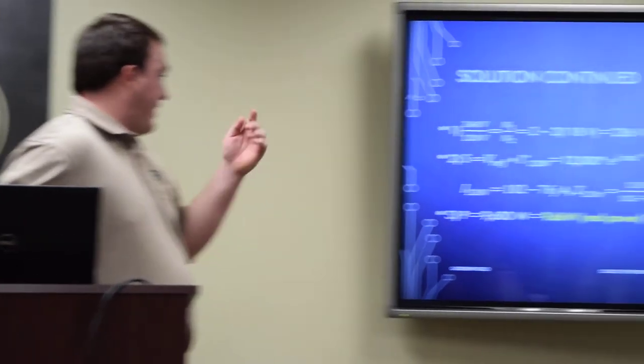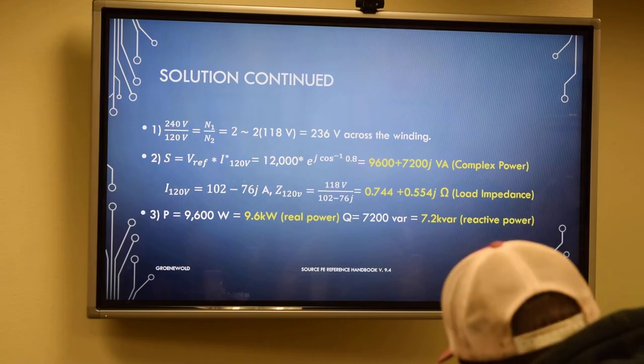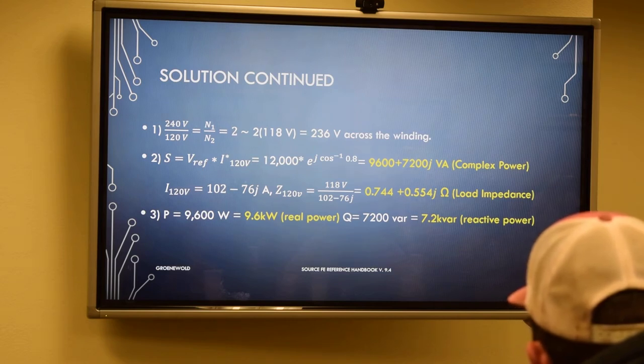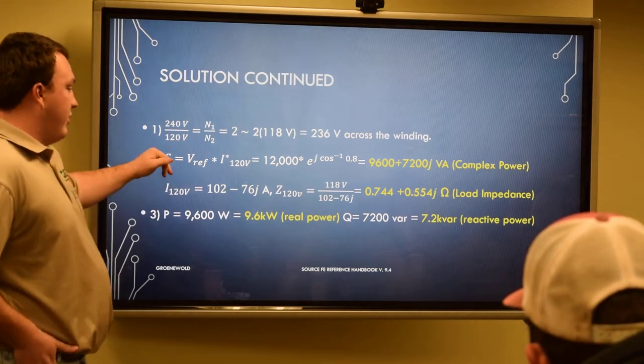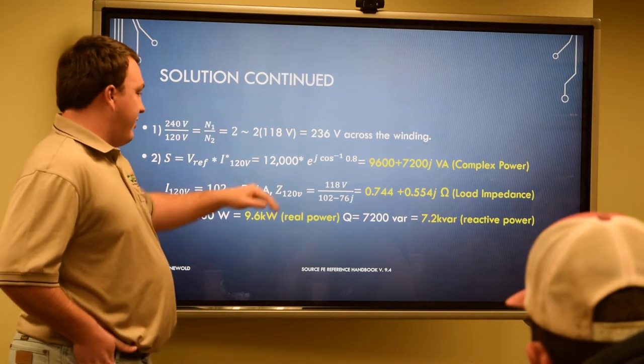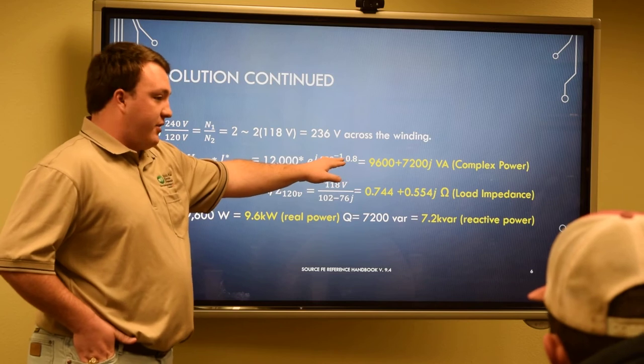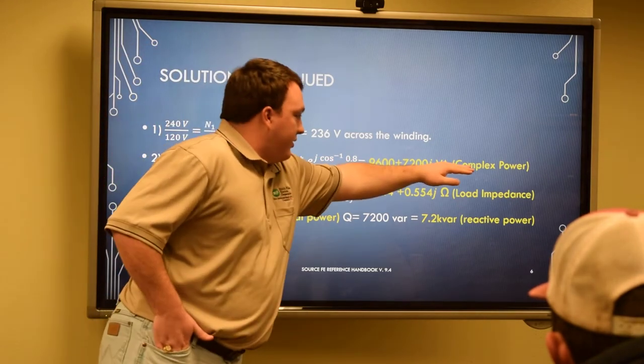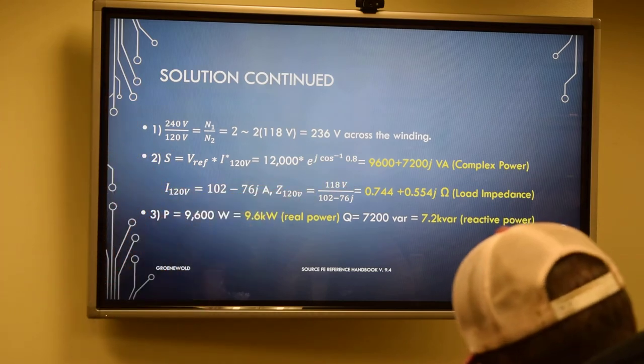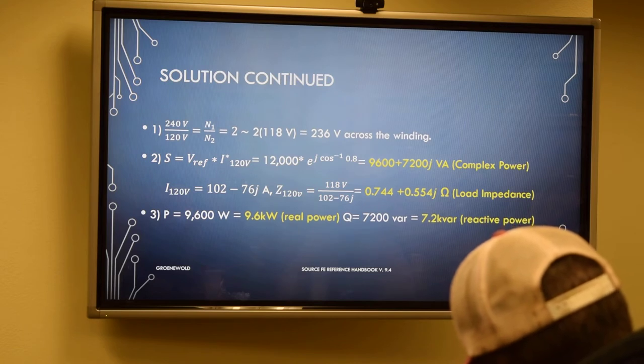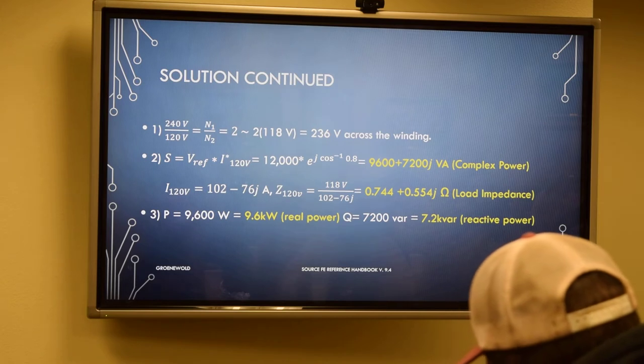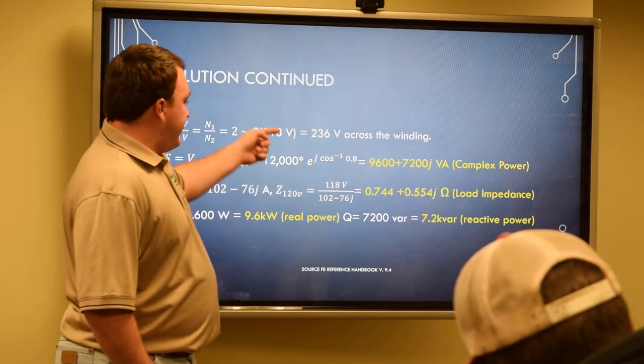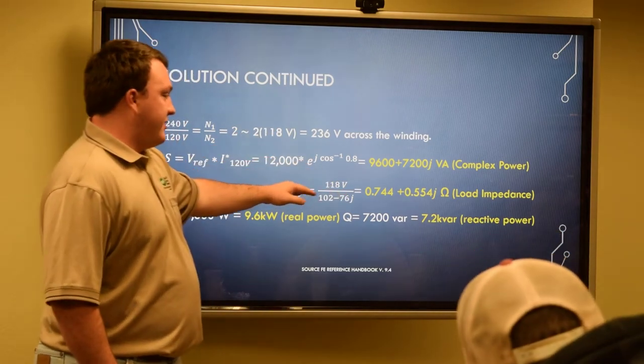To first start us off, we would just take the 240/120 and get your turns ratio, which is that first part right here, the two. Multiply it by our reference voltage and you'll get 236 volts across the 240 volt winding. Then we'll bring it down in here and start calculating for the complex power. Your voltage reference that's absorbed by the load was that 12 kVA, and we're multiplying it here by that power factor. This is a polar representation of the power factor to get into the current. Then we'll calculate your load current, and your voltage, which is the 118 from your reference, divided by the current, will get you your load impedance.